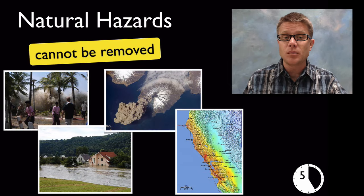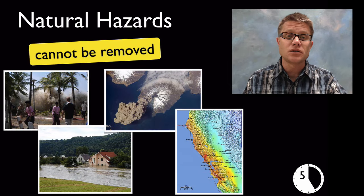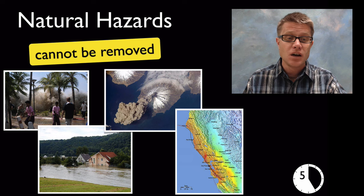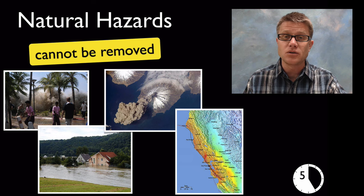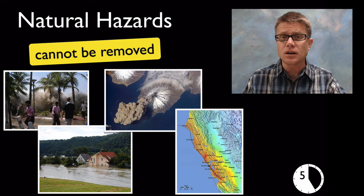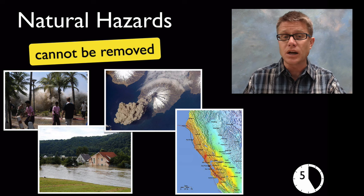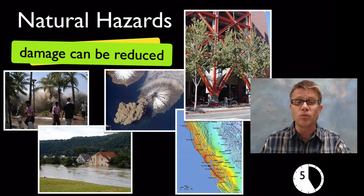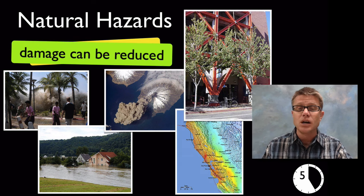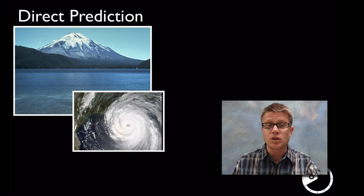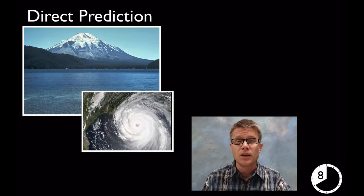As you move into the upper elementary grades, start talking about natural hazards — listing them: tsunamis, earthquakes, volcanoes. Make sure students know they're not going to go anywhere, that we cannot remove the natural hazard. But what we can do is prepare for it and reduce the damage caused by it.